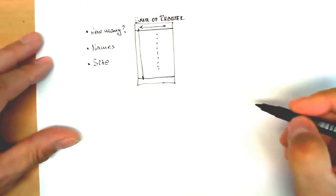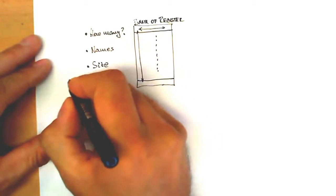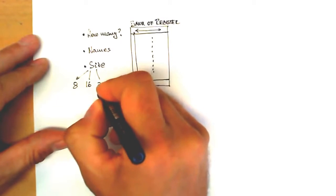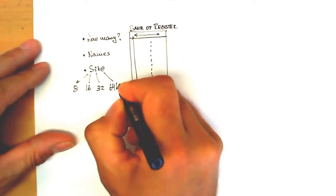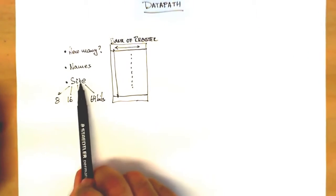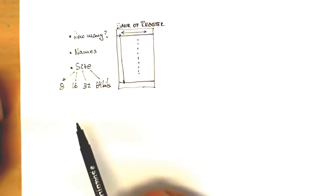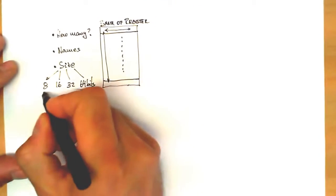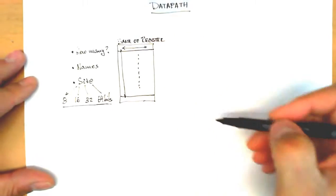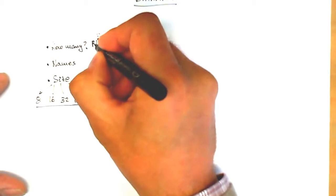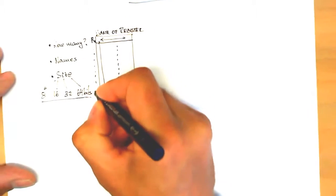The number of registers represents one dimension. Regarding size, the typical values are either 8, 16, 32, or 64 bits. From one microprocessor to another, both the size and the number and also the names of these registers change. The first thing you should do to get familiar with an architecture is to get a hold of this information to understand how data is processed inside. Let's suppose these registers have names from R1 all the way through RK.